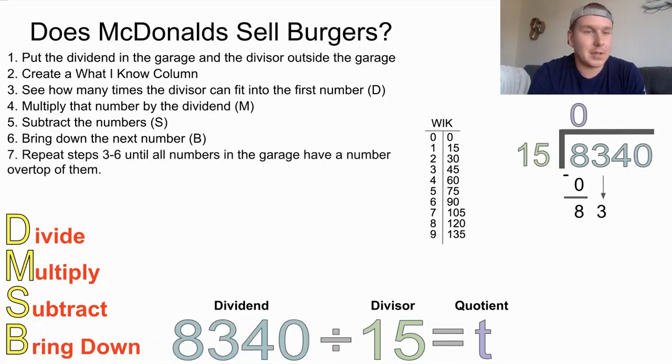Now step 7 is something we're going to do kind of over and over again until we get our answer. We're going to repeat steps 3 through 6 until all the numbers in the garage have a number over top of them. So we're going to have a total of 4 numbers. So let's go back to the D, divide. So we're going to ask ourselves, how many times can 15 fit into 83? Well, if I take a look over at my what I know column, the biggest number on the right side of my what I know column without going over 83 is 75. And 5 goes with 75. So we're going to put a 5 up at the top.